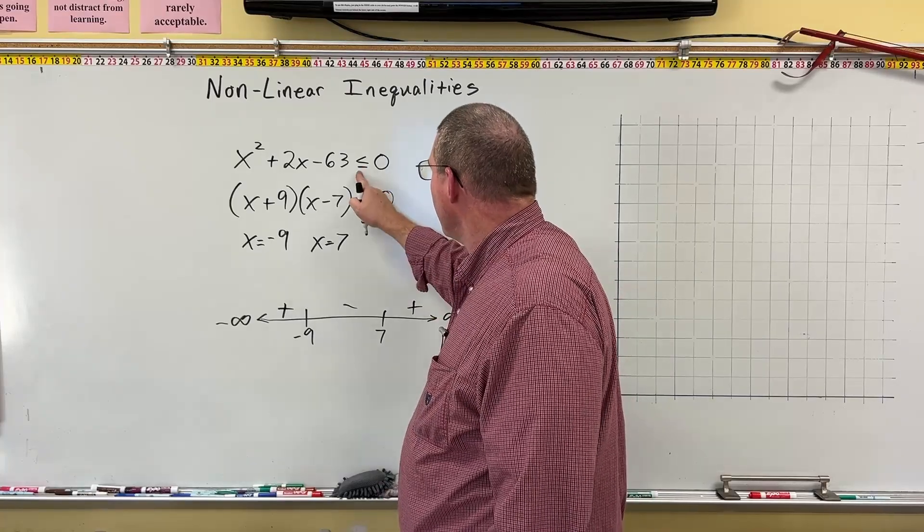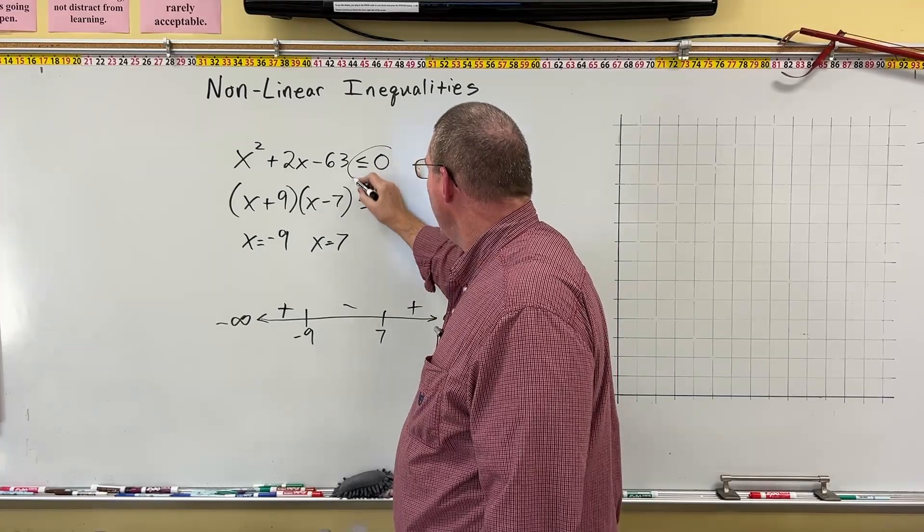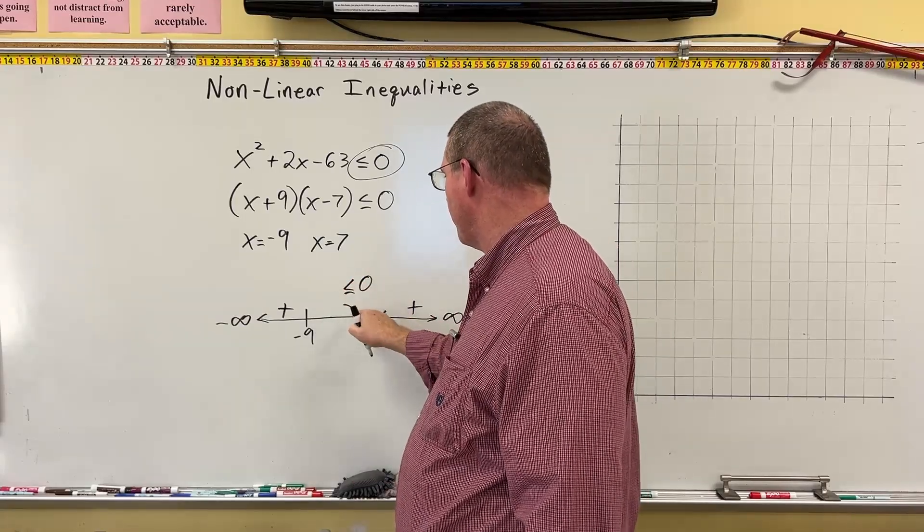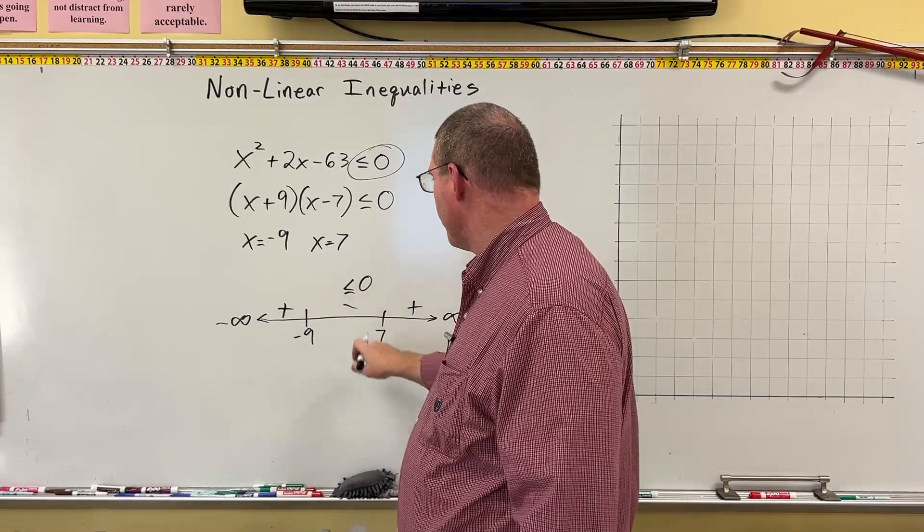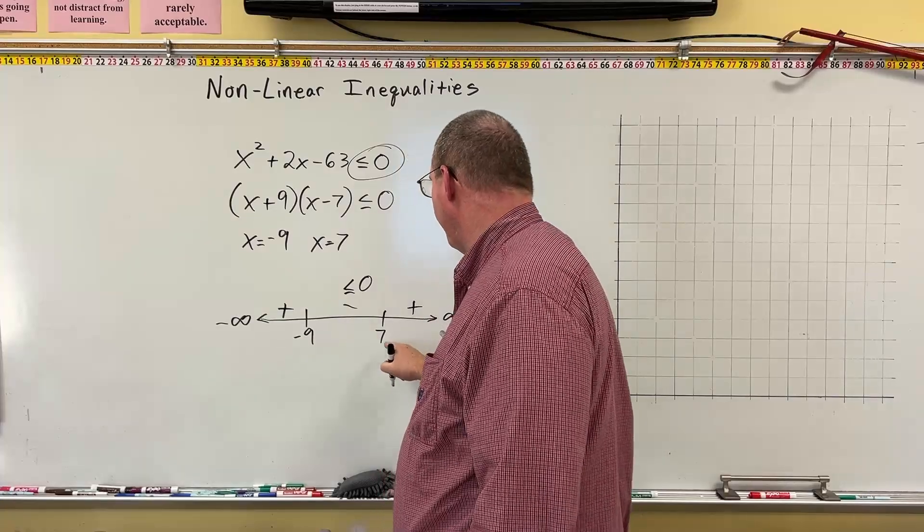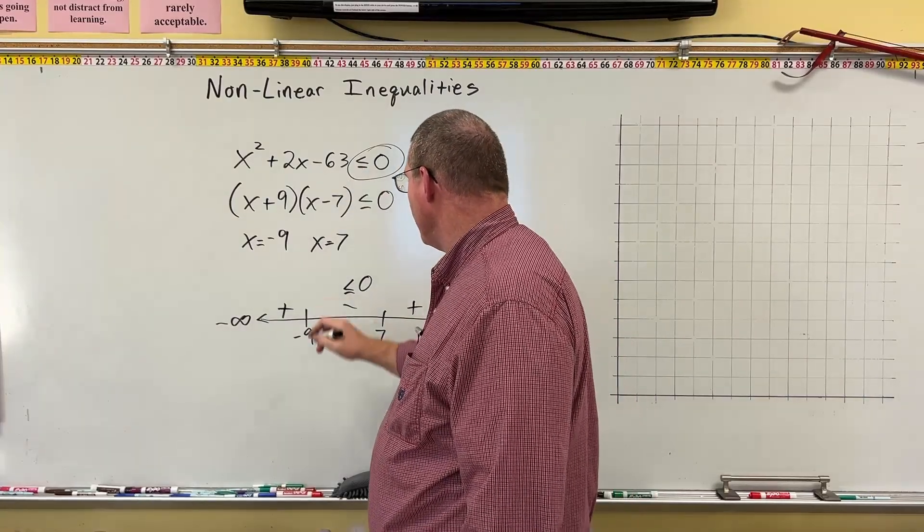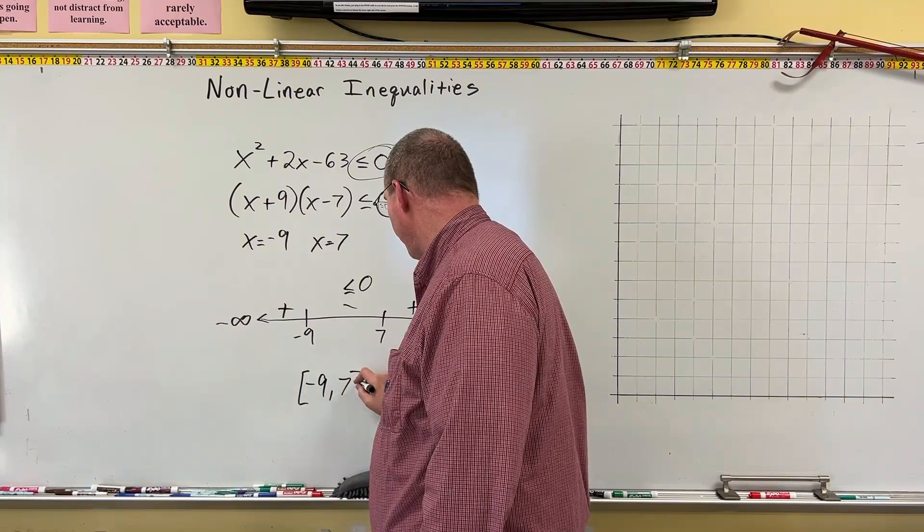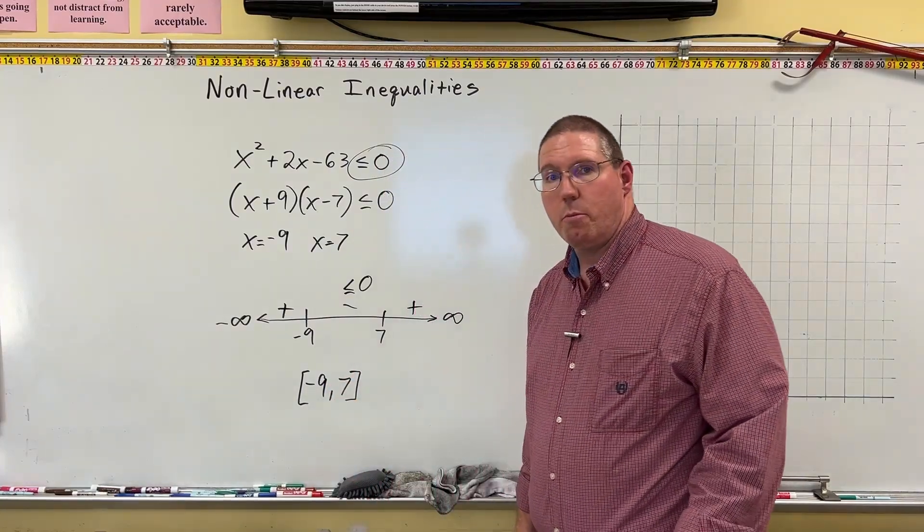And this says less than or equal to 0. Well, less than 0 is a negative number, so we're looking for the negatives. This is less than or equal to 0, this one. So there's only one interval that has a negative. So it's going from negative 9 up to 7. It has the or equal to, so it'll be a bracket. So it'll be bracket, negative 9, up to 7, close bracket, and we're done.